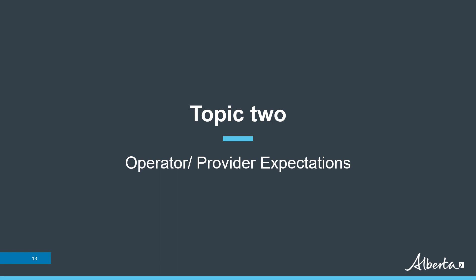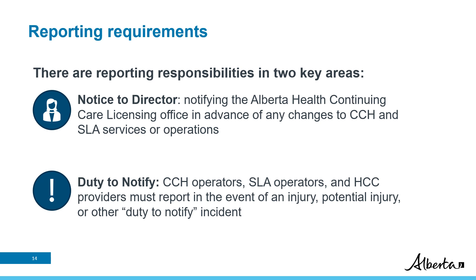Topic 2 covers operator and provider expectations. We will cover the reporting requirements for operators and providers — specifically, notice to director and duty to notify. Operators and providers have reporting responsibilities in two key areas. Notice to director involves notifying the Continuing Care Licensing Office in advance of any changes to a continuing care home or supportive living accommodation's services or operations. The director in these circumstances refers to the individual appointed by the Minister for the purposes of the Continuing Care Act.